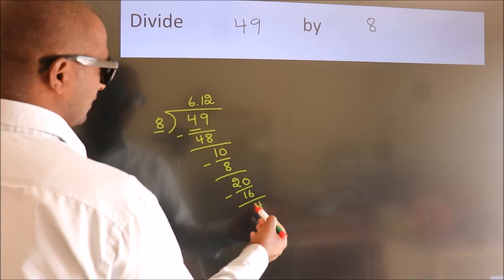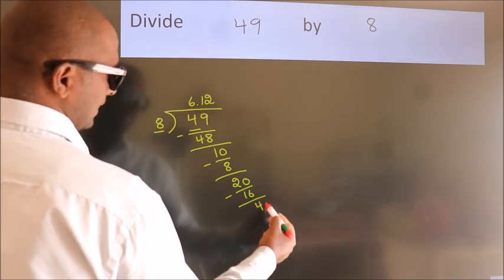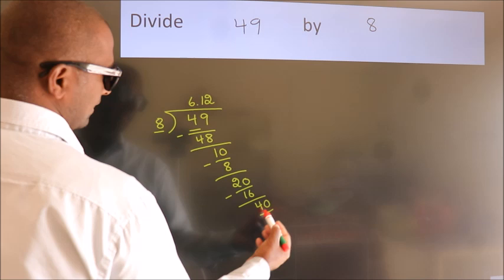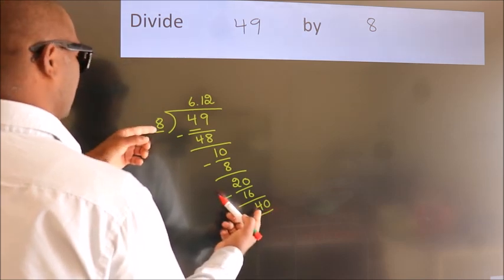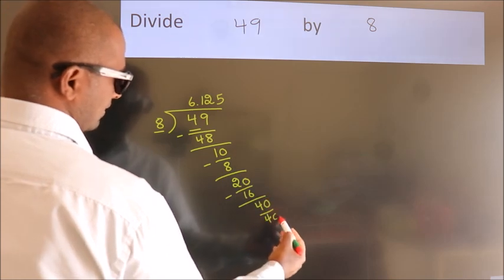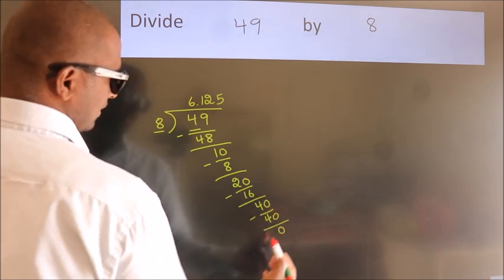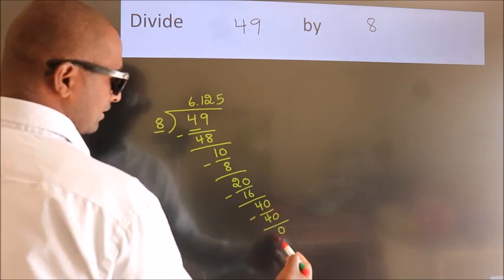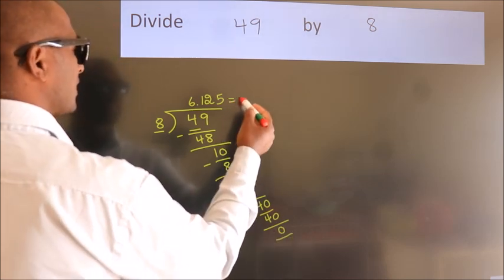After this, we already have the decimal, so we directly take 0, giving us 40. When do we get 40 in the 8 table? 8 times 5 equals 40. Now we subtract and get 0. Here, we got remainder 0, so this is our quotient.